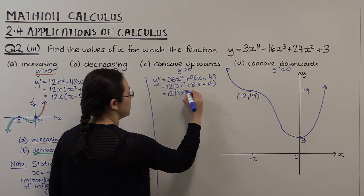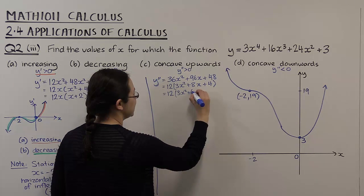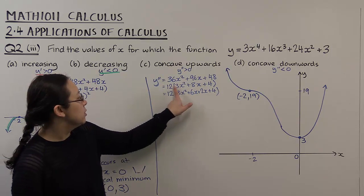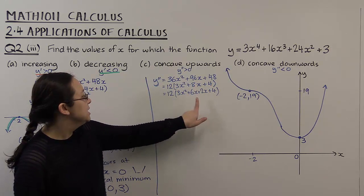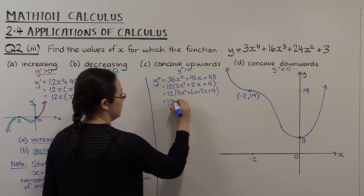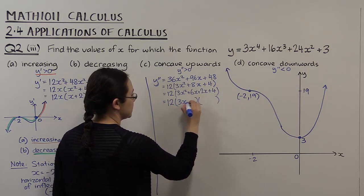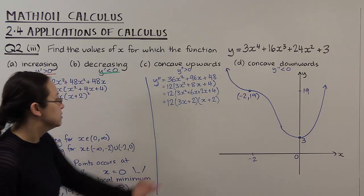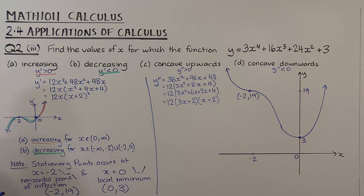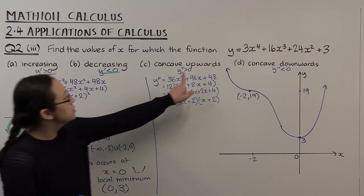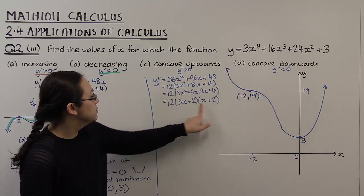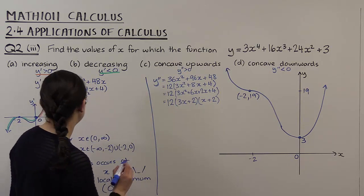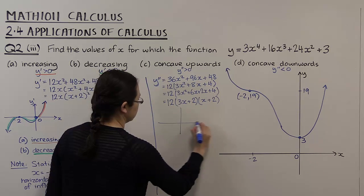To factorize further, I split the middle term: two numbers that multiply to 12 and add to 8 are 6 and 2. So 3x² plus 6x plus 2x plus 4 factorizes into (3x plus 2)(x plus 2), giving y'' = 12(3x + 2)(x + 2). To solve when it's concave up and concave down, we need a little sketch of y''.